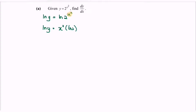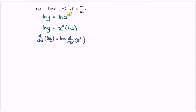Now we have ln y equals x squared times ln 2, where ln 2 is a constant value. Next, I'm going to differentiate both sides with respect to x. Differentiating ln y gives us 1 over y, and since y is a function of x, we need to multiply by dy/dx. This equals ln 2 times the derivative of x squared with respect to x, which gives 2x.